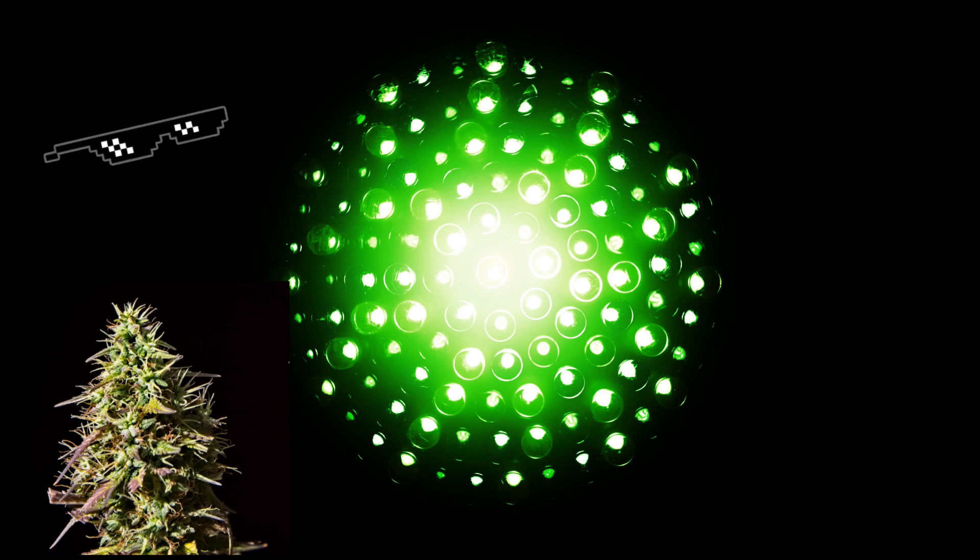So because they don't see green nearly as well as red and blue, a small amount of green light won't trigger the plant into thinking that it's the light cycle again.